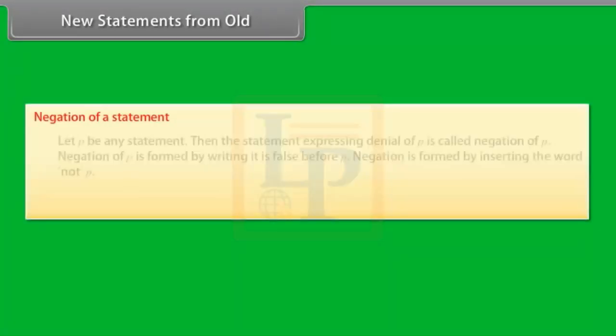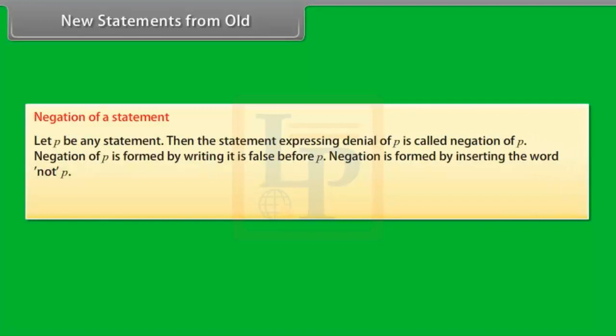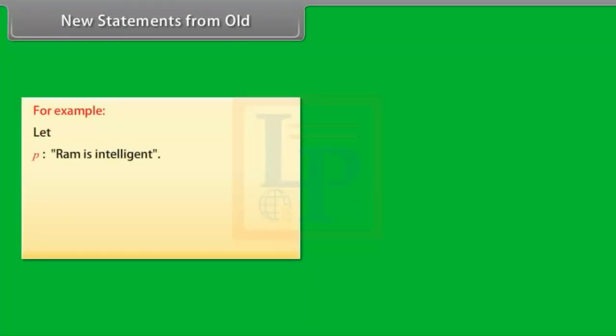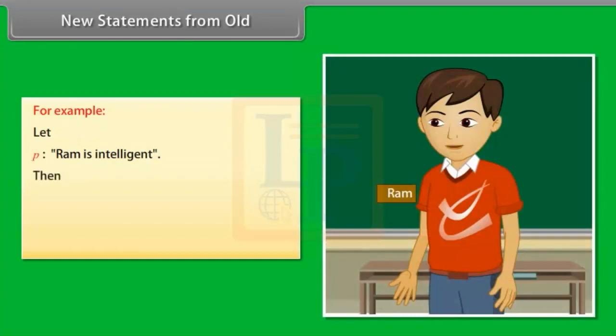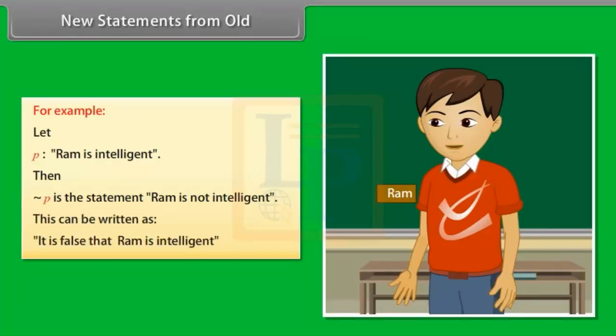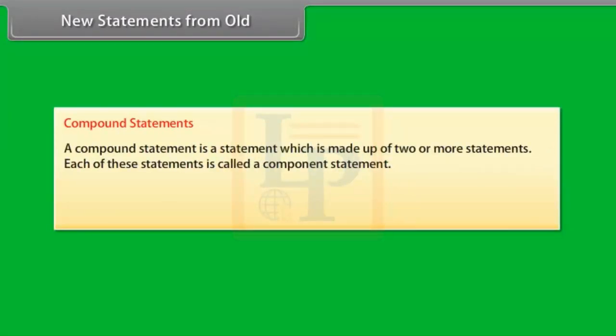New statements from old — Negation of a statement. Let p be any statement. The statement expressing denial of p is called negation of p. Negation of p is formed by writing 'it is false' before p, or by inserting the word 'not.' The negation of statement p is denoted as 'not p.' For example, let p be the statement 'Ram is intelligent.' Then not p is 'Ram is not intelligent,' or 'It is false that Ram is intelligent.'